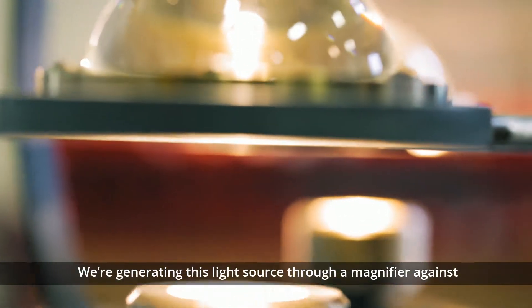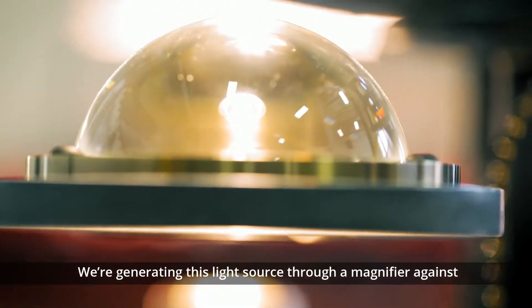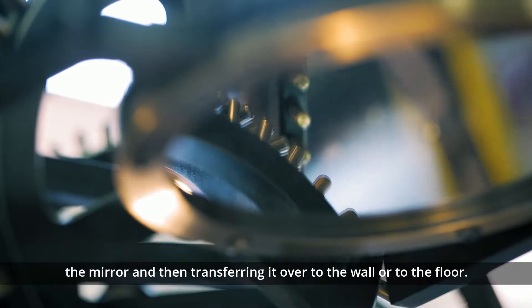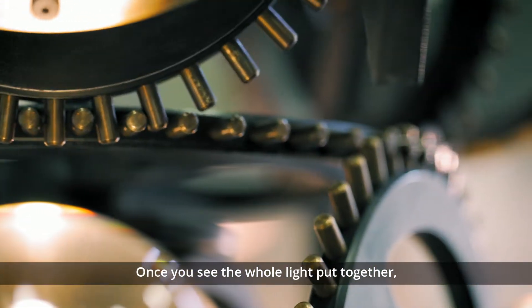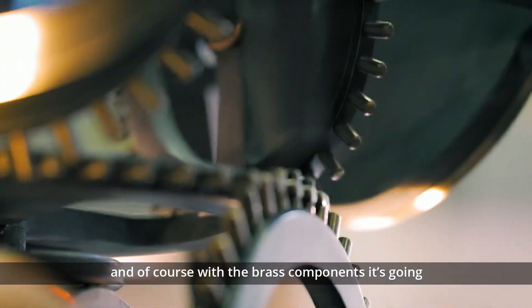So we're generating this light source through a magnifier against the mirror and then transferring it over to the wall or to the floor. And once you see the whole light put together, and of course with the brass components, it's going to look very much that era.